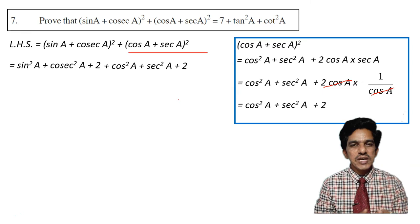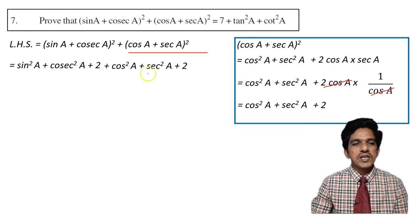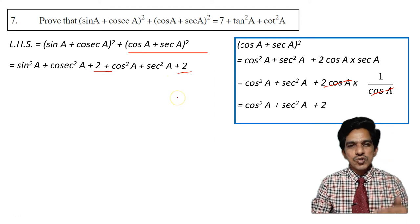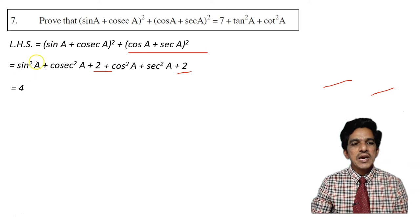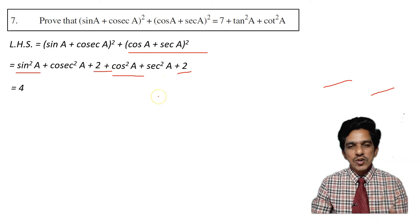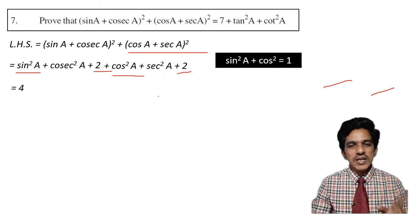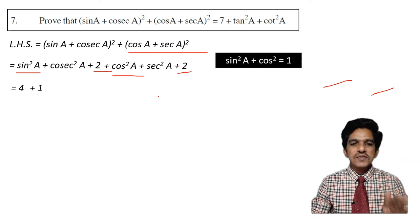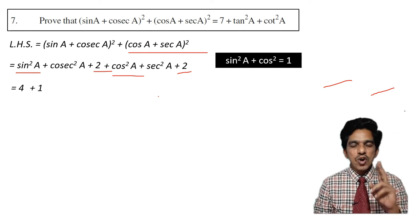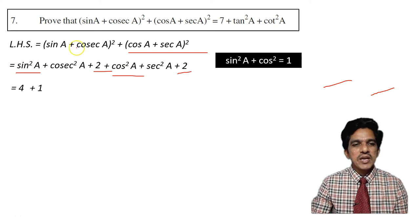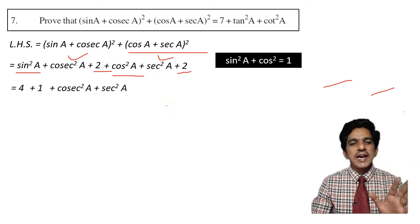Now combining both expansions, we have 4 trigonometric ratio terms and two constants, 2 and 2, which give us 4. Looking at the trig terms, we have sin square a plus cos square a, and we already know that sin square a plus cos square a equals 1. So we replace those with 1, and we are left with cosecant square a and secant square a, plus the constants.